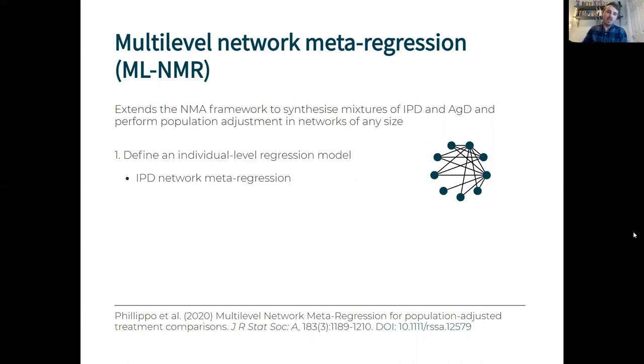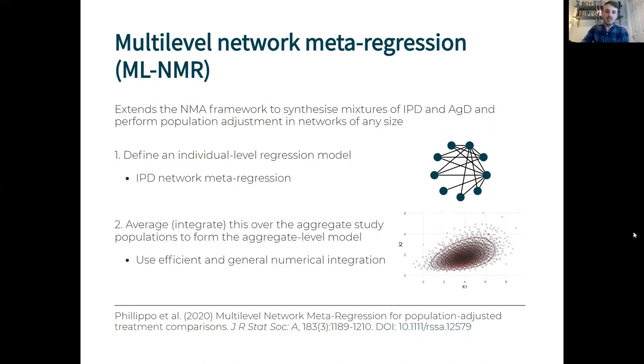It works first by defining an individual level regression model, which is actually exactly the same model as we'd fit in an IPD network meta-regression. Then for the aggregate studies we average or integrate this individual level model over the aggregate study populations to form the aggregate level model. We do this using efficient and general numerical integration techniques.